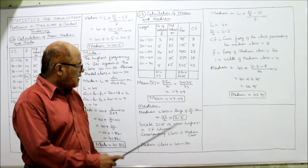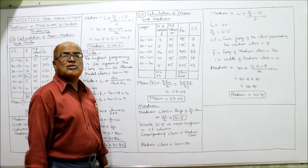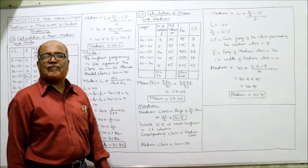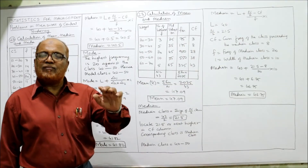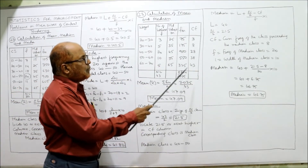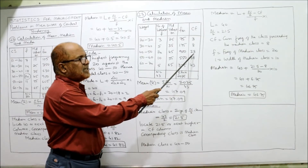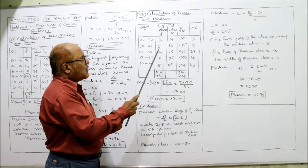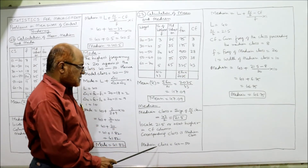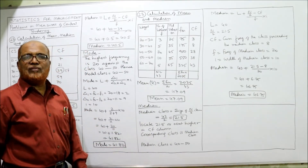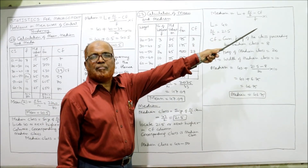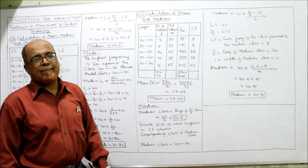For the median: median class = size of n/2 = 43/2 = 21.5. Locate 21.5 or the next higher value in the cf column. The next higher value is 28, and the class corresponding to cf = 28 is 40–50. So the median class is 40–50. Apply the formula: median = l + (n/2 − cf) ÷ f × i.